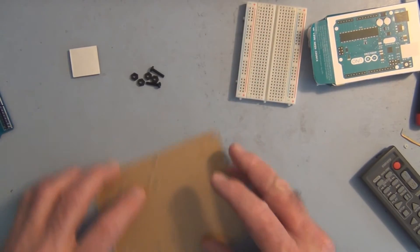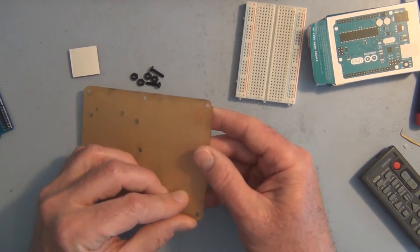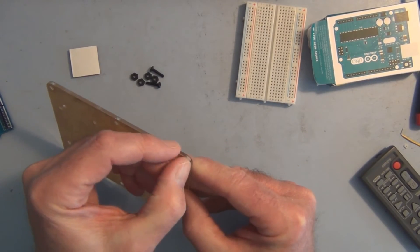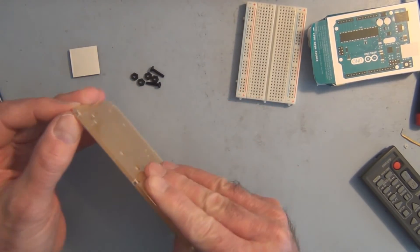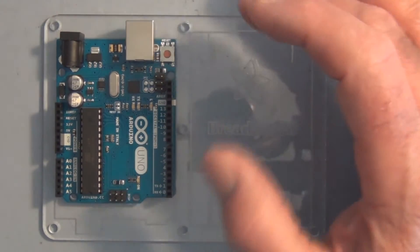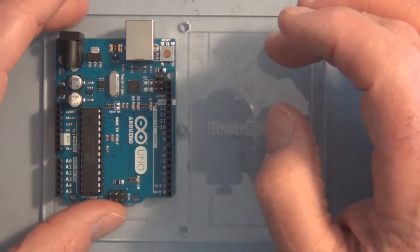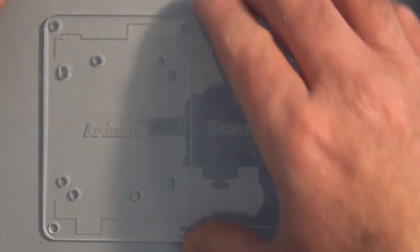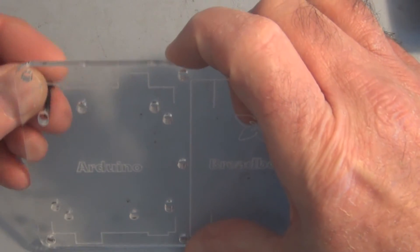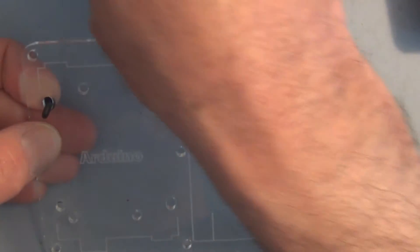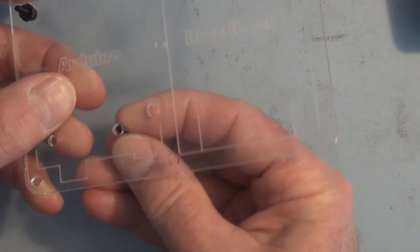There's some paper on the back here that you peel off. Easier said than done. I'm going to orient it like this, and there are only two screws—one here and the second one here.